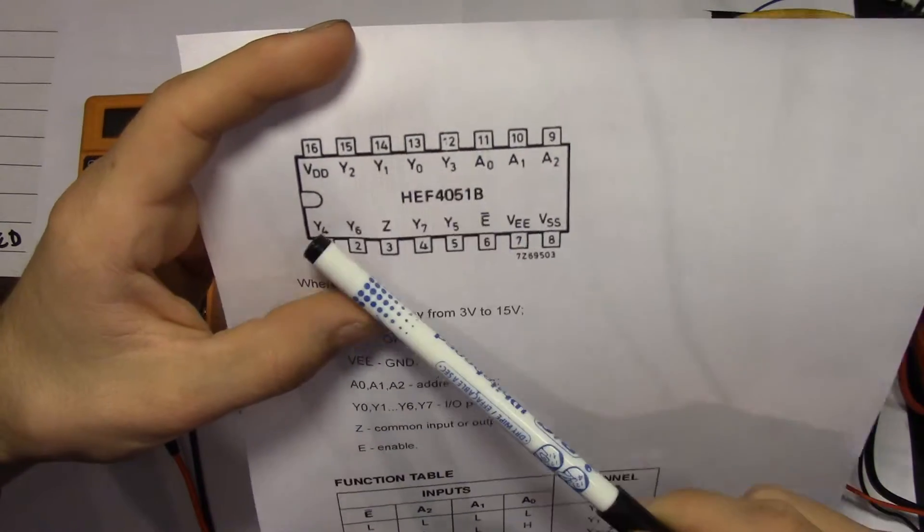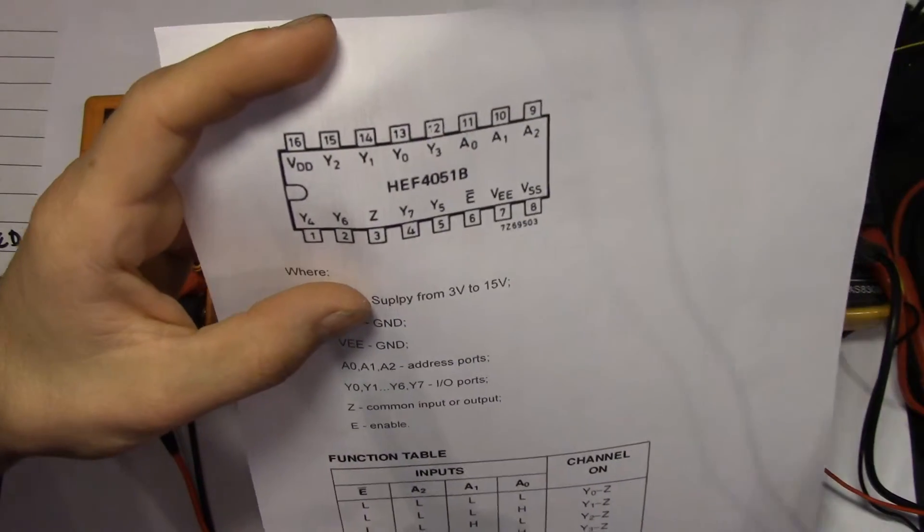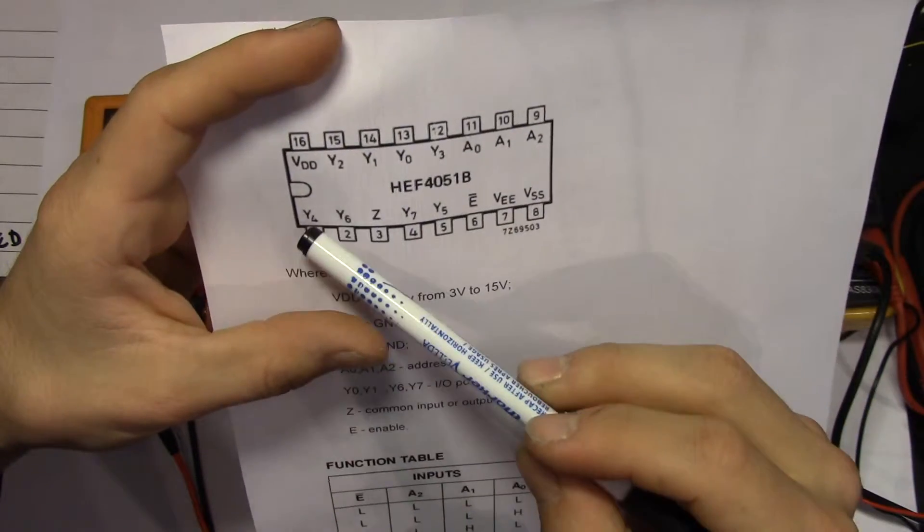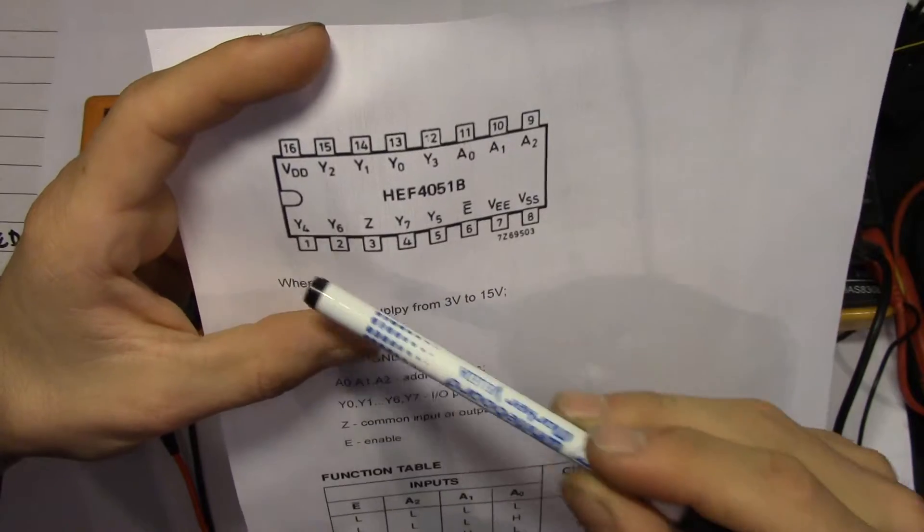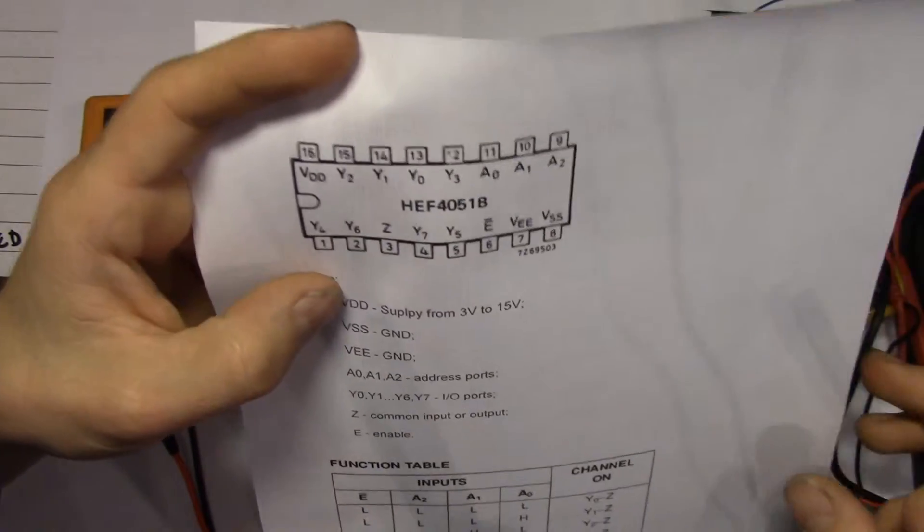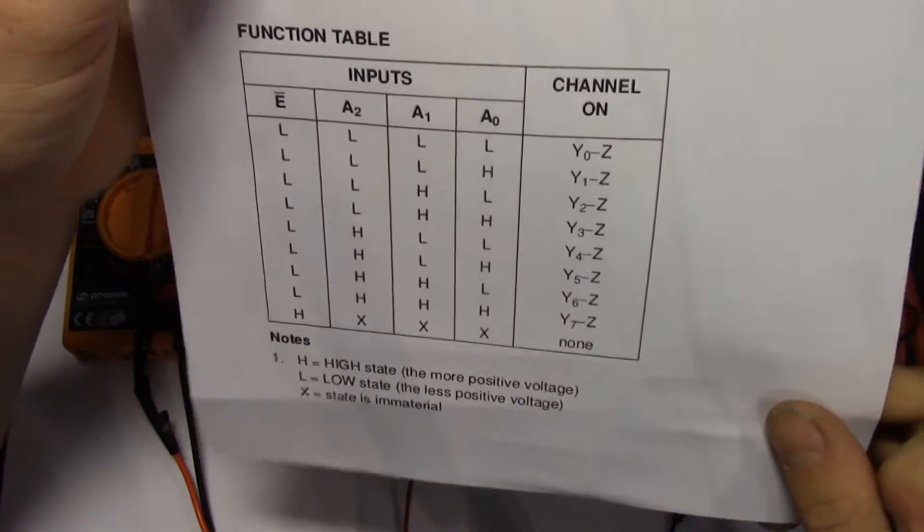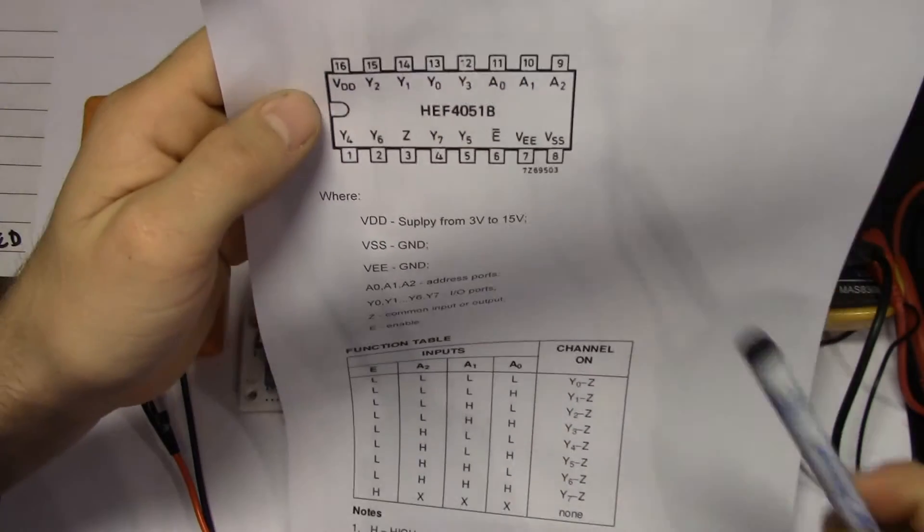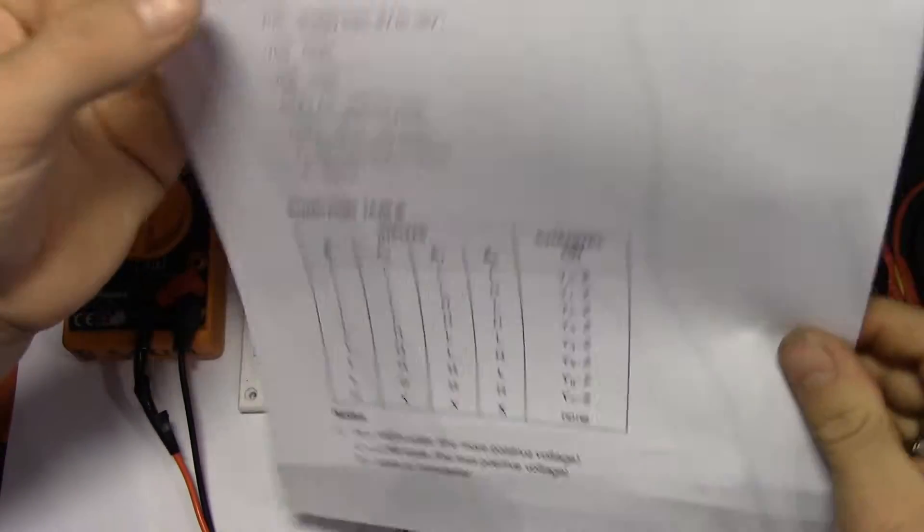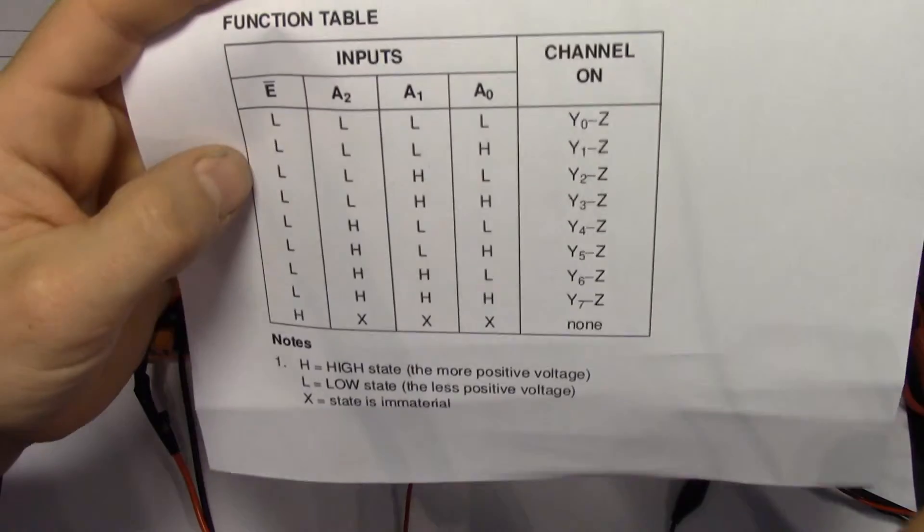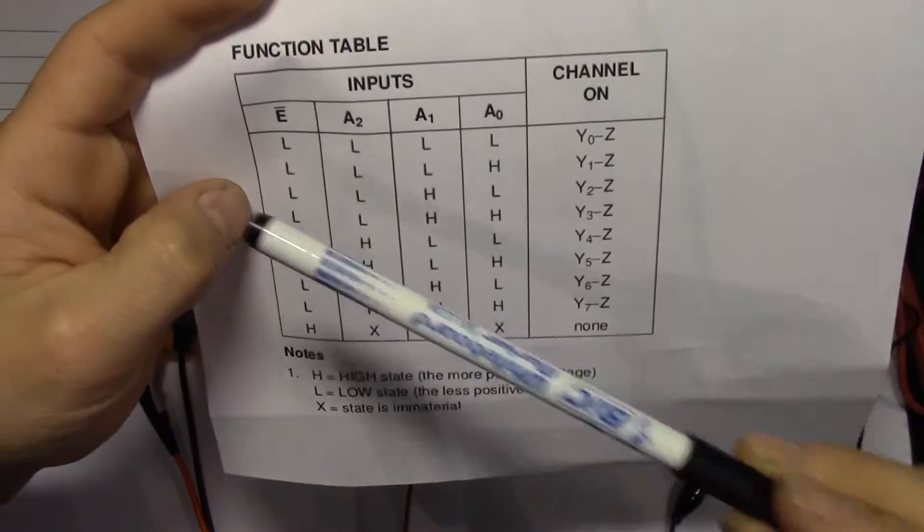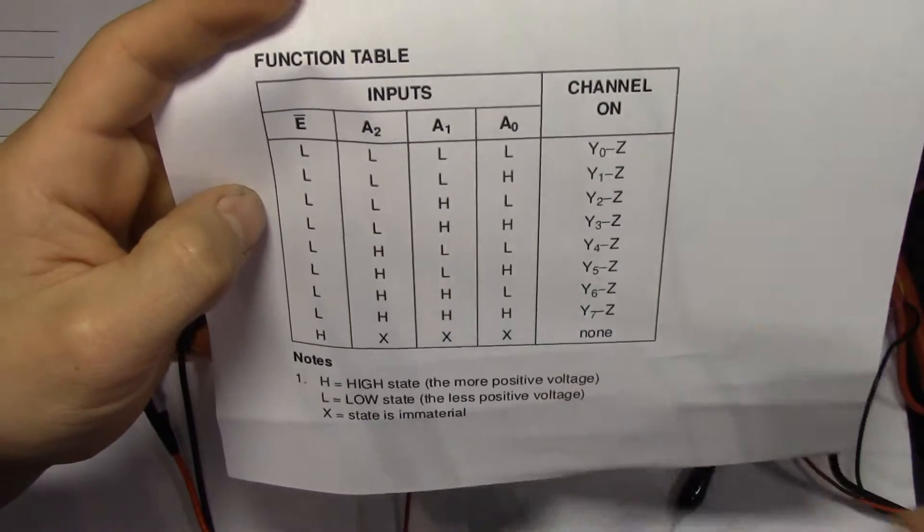And then we have the different I/O pins. All of these Y, you send in analog signals based on the state of these buttons, high or low, as you can see on the function table or truth table on the bottom here. Different pins will be connected to the output right here. So we have A0, A1 and A2 and also enable, which is just going to be connected to ground.